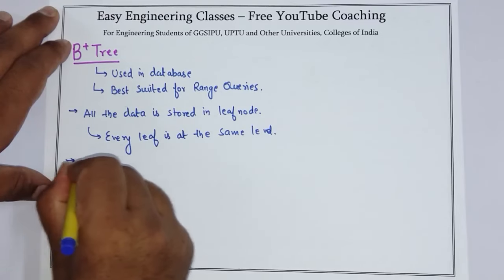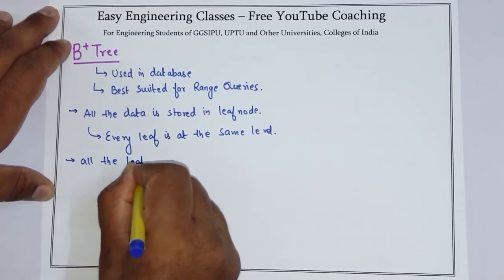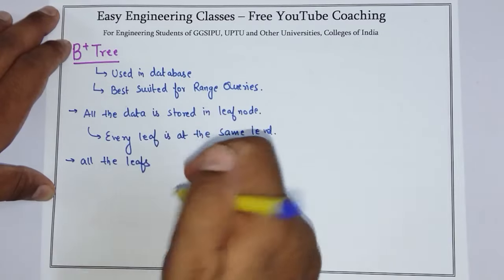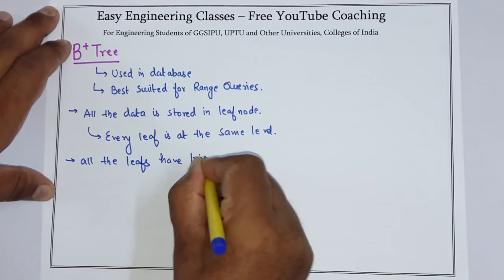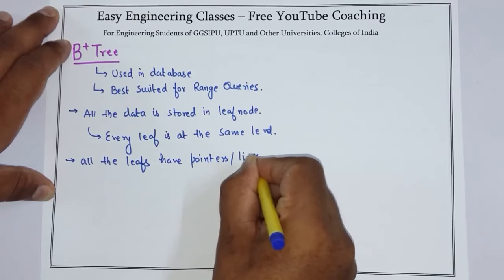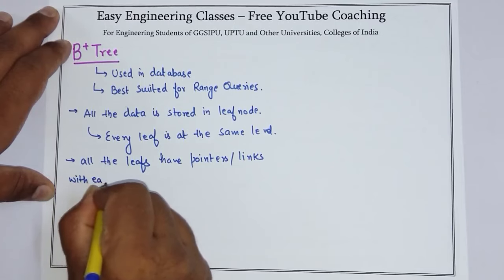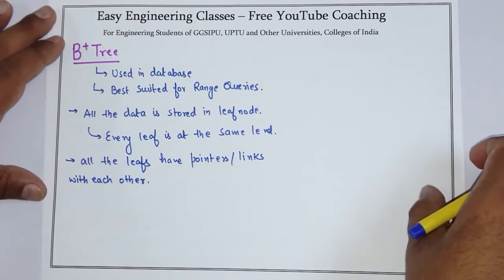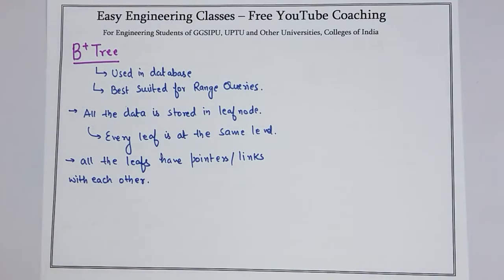And all the leaves have pointers or links with each other. So this is a basic theory of B plus tree.